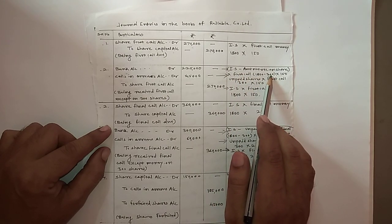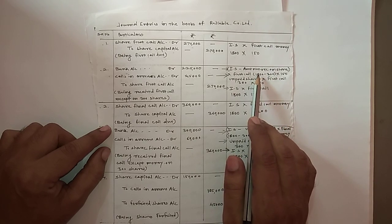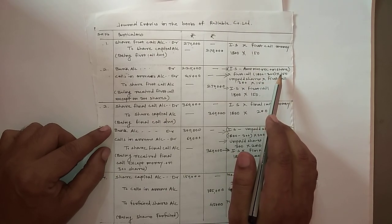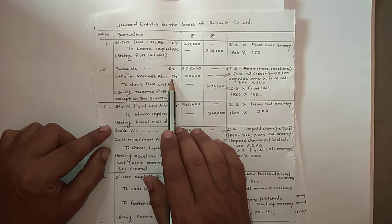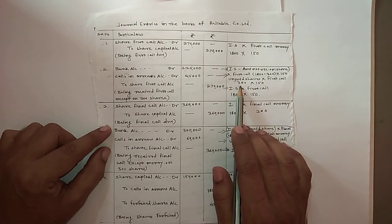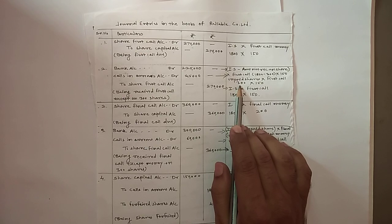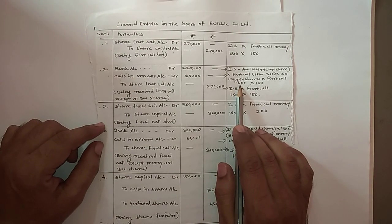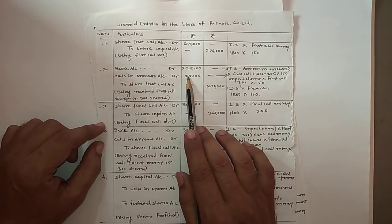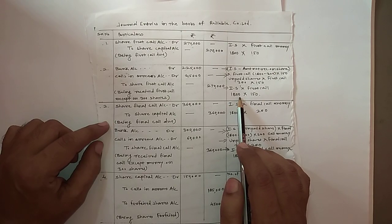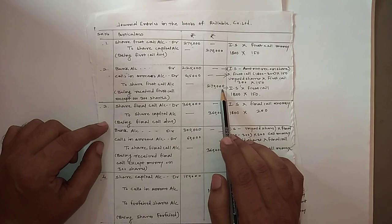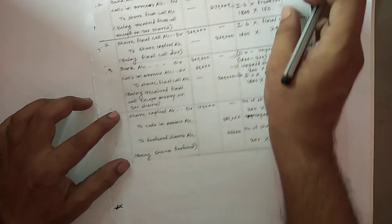The 300 shares held by the shareholder are subtracted from issued shares, so the bank debit amount is rupees 2,25,000. Calls in Arrears Account is for unpaid shares: 300 shares into first call money rupees 150, giving rupees 45,000. Share First Call Account credit is issued shares into first call money — 1800 into 150 — equals rupees 2,70,000. A similar entry is passed for the final call due: Share Final Call Account debit, to Share Capital Account — being final call due.